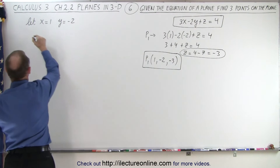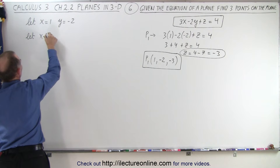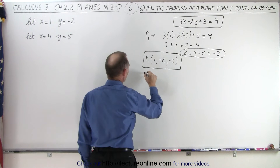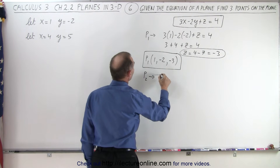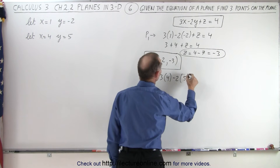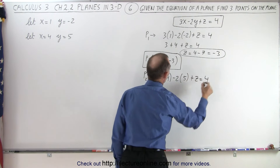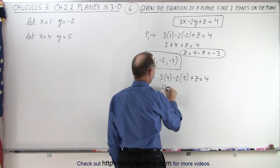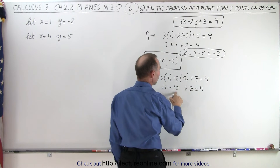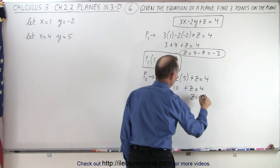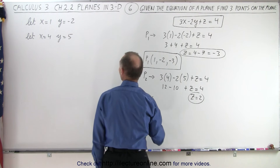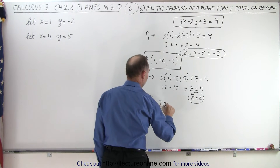Now let x equals 4 and y equals 5, and we find a second point. For point 2, we take 3 times x (which is 4) minus 2 times y (which is 5) plus z equals 4. So I get 12 minus 10 plus z equals 4. 12 minus 10 is 2, so z equals 2. That means our second point, point 2, is (4, 5, 2).